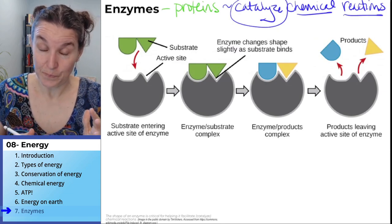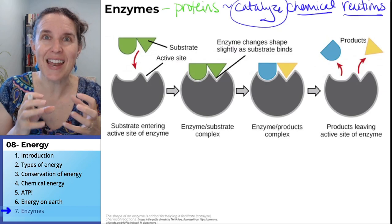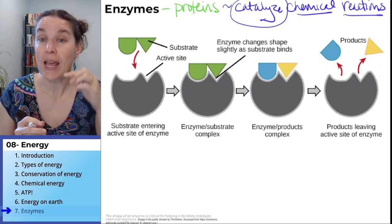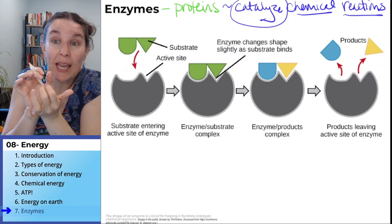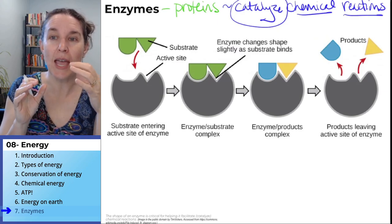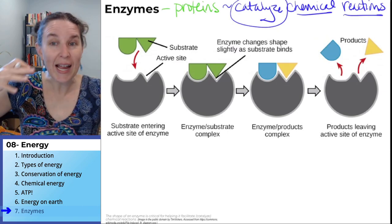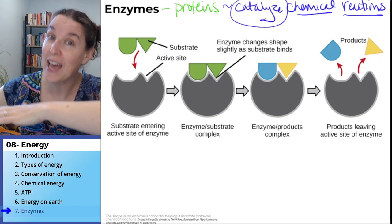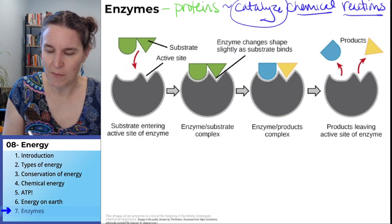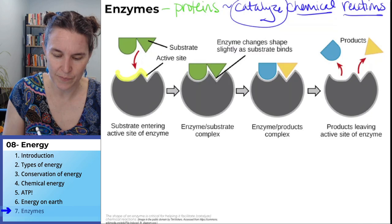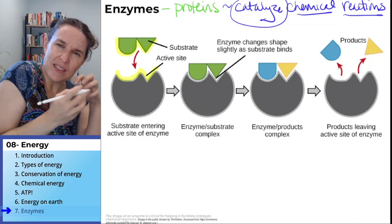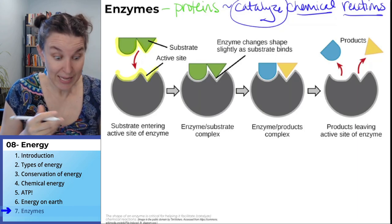Enzymes are proteins, which means they're strings of amino acids that have a specific shape. The shape of the enzyme determines its function. Enzymes usually have a site — I think of it as a sticky part — and it's called the active site. The reactants in the chemical reaction that they are catalyzing bind to that active site. So you end up with this sticky zone.